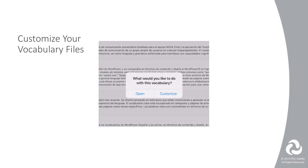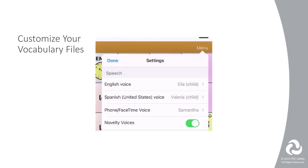First, make a copy of the vocabulary files that you want to connect. This could be an English and French file, a Spanish and French file, or whichever files you want to connect by a button. Next, make sure you have selected a voice to go with each language in Settings under Speech.